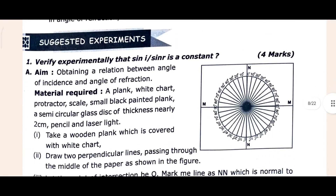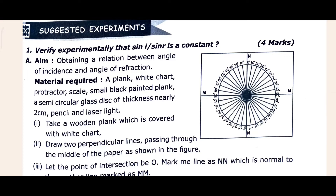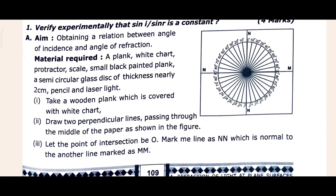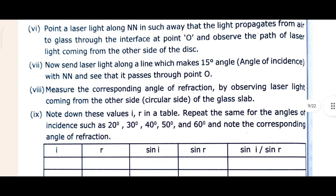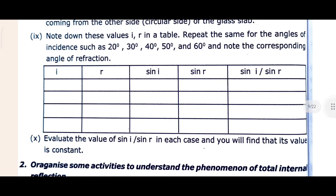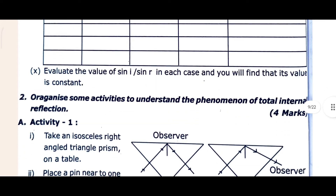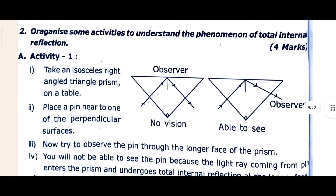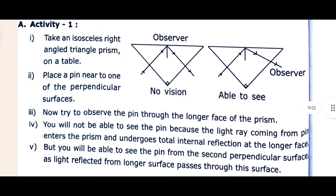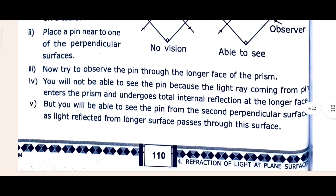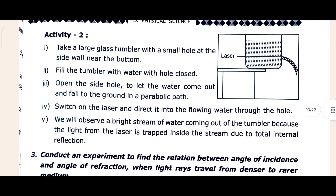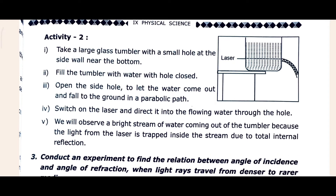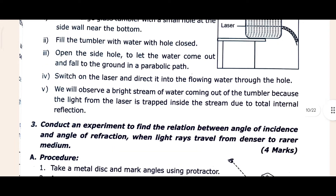Now come to the Suggested Experiments. The first experiment is here — the aim, sign, material required is given. Then Activity 1 is here with its answer. Then Activity 2 is here and its answer is given. Don't be confused — if it is complete, come to the third one, which has the procedure given.